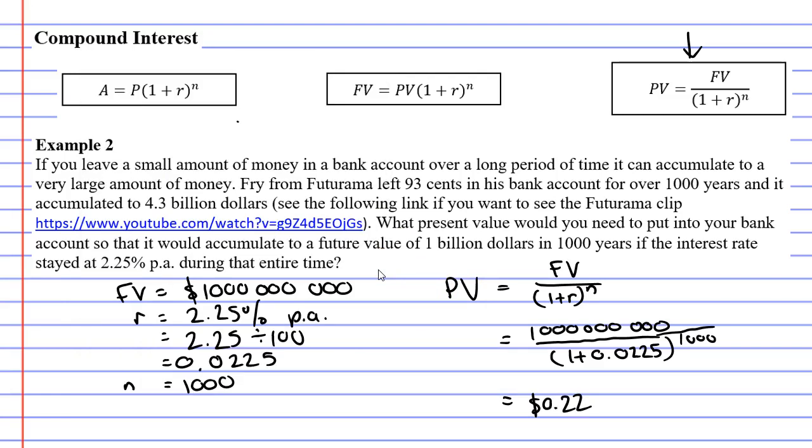So all you need to do is put 22 cents in your bank account and in 1,000 years, if the interest rate stays the same, you'll have a billion dollars. Anyway, that concludes our video on example two. Remember to read the description below for links to work booklets that relate to this video. We'll see you in the next video.